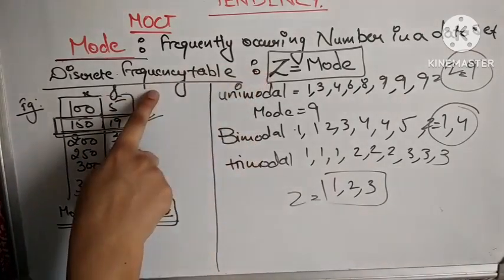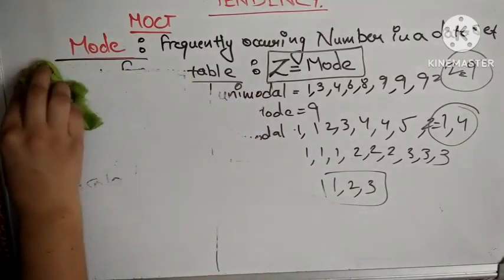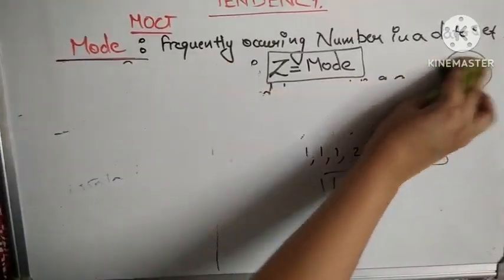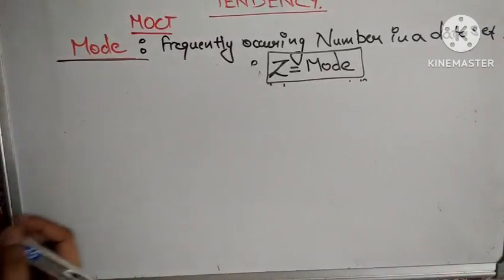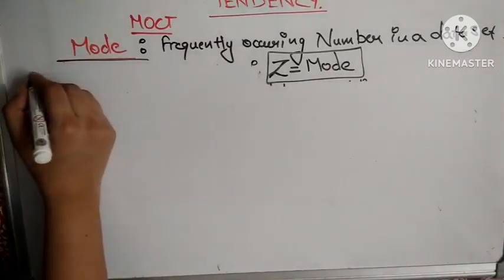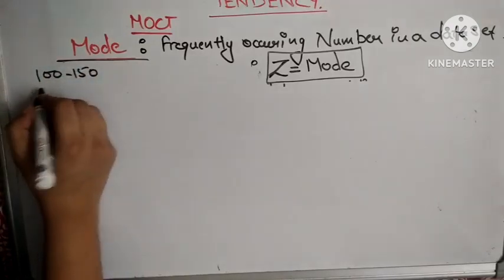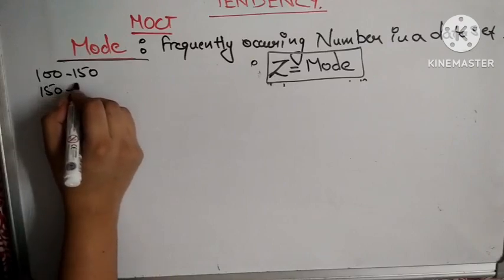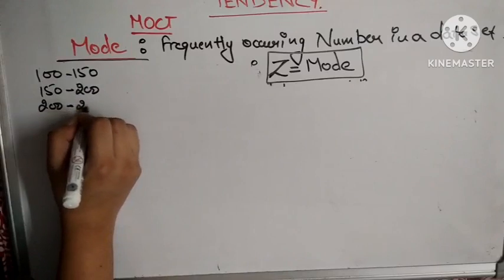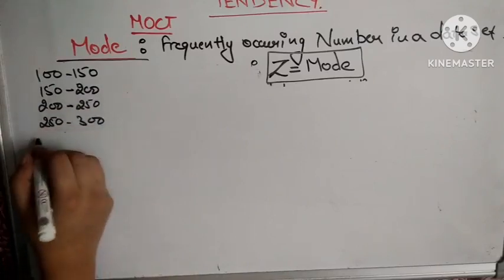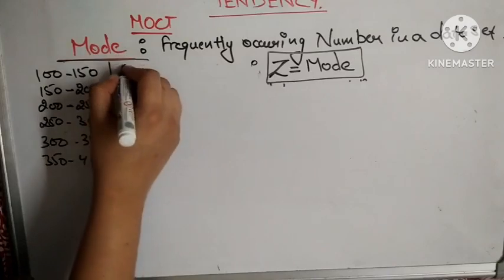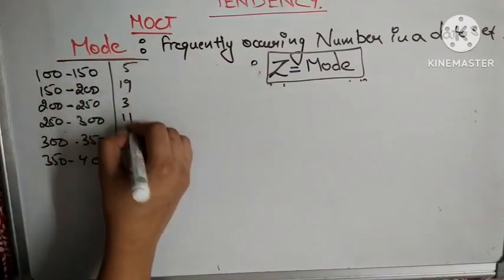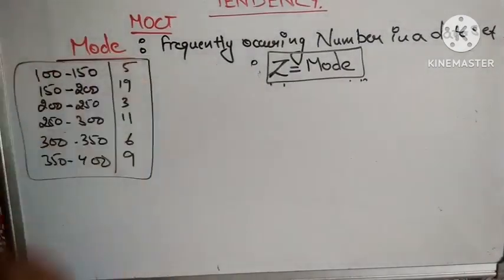Now let us see how we can calculate the mode if we have a continuous frequency table. The class intervals are 100–150, 150–200, 200–250, 250–300, 300–350, and 350–400, with frequencies 5, 19, 3, 11, 6, and 9. We need to find the mode for this continuous frequency table.